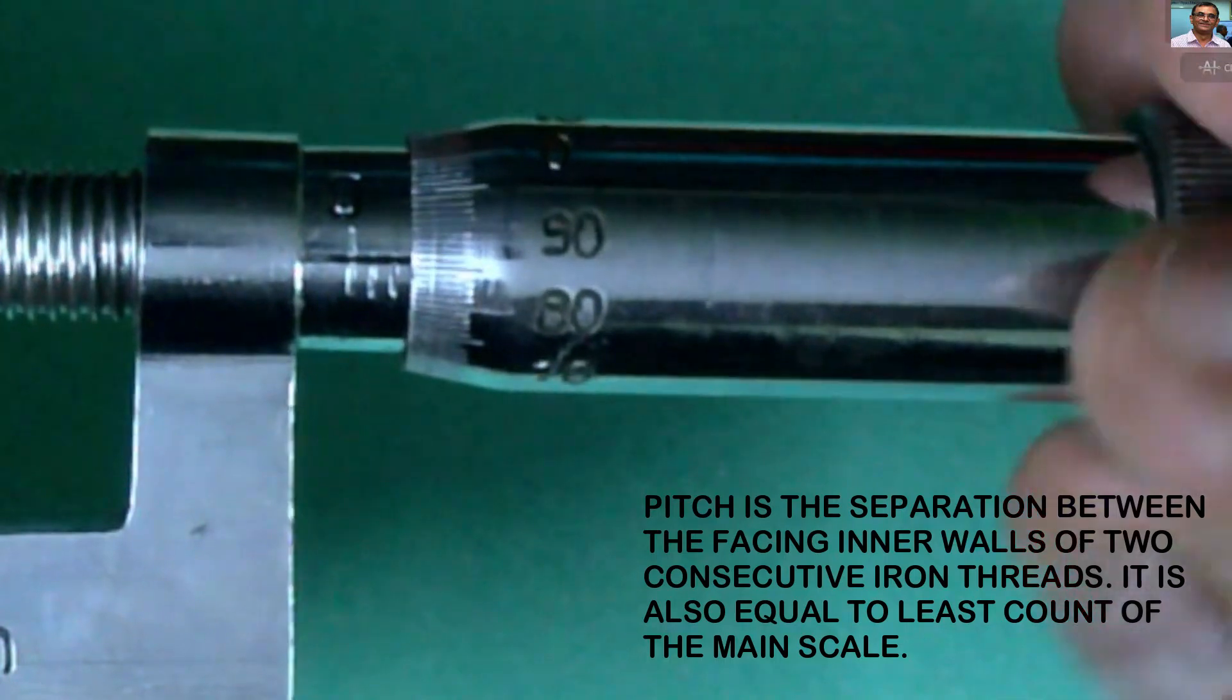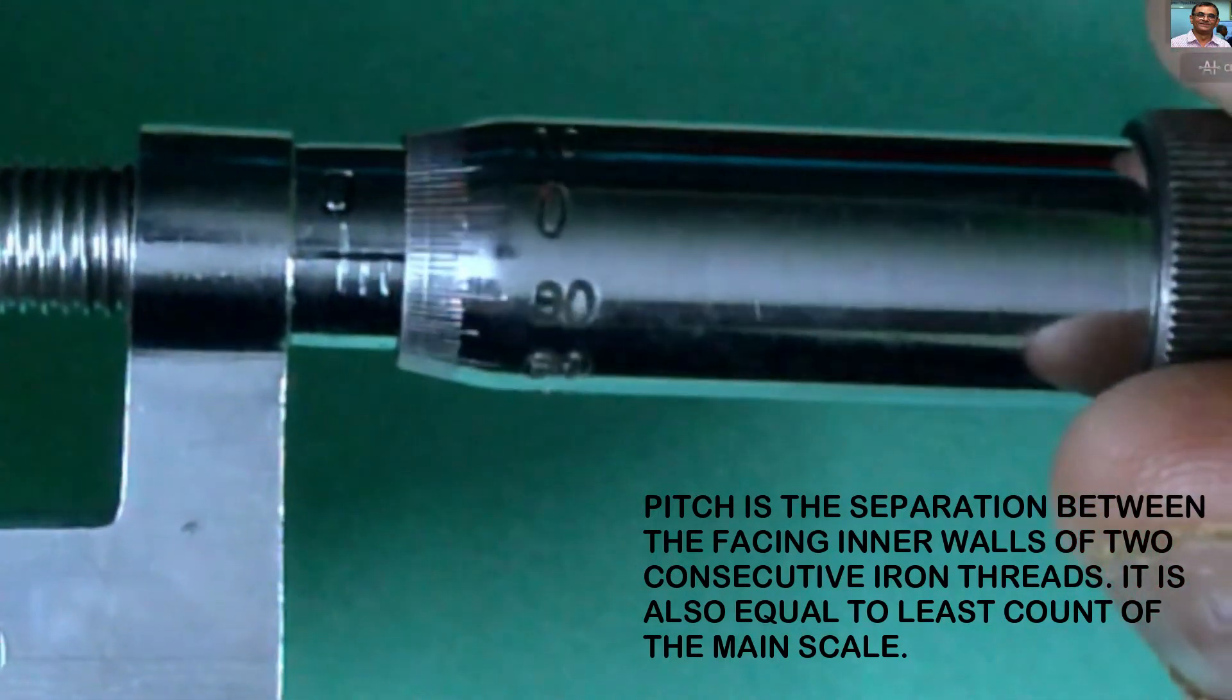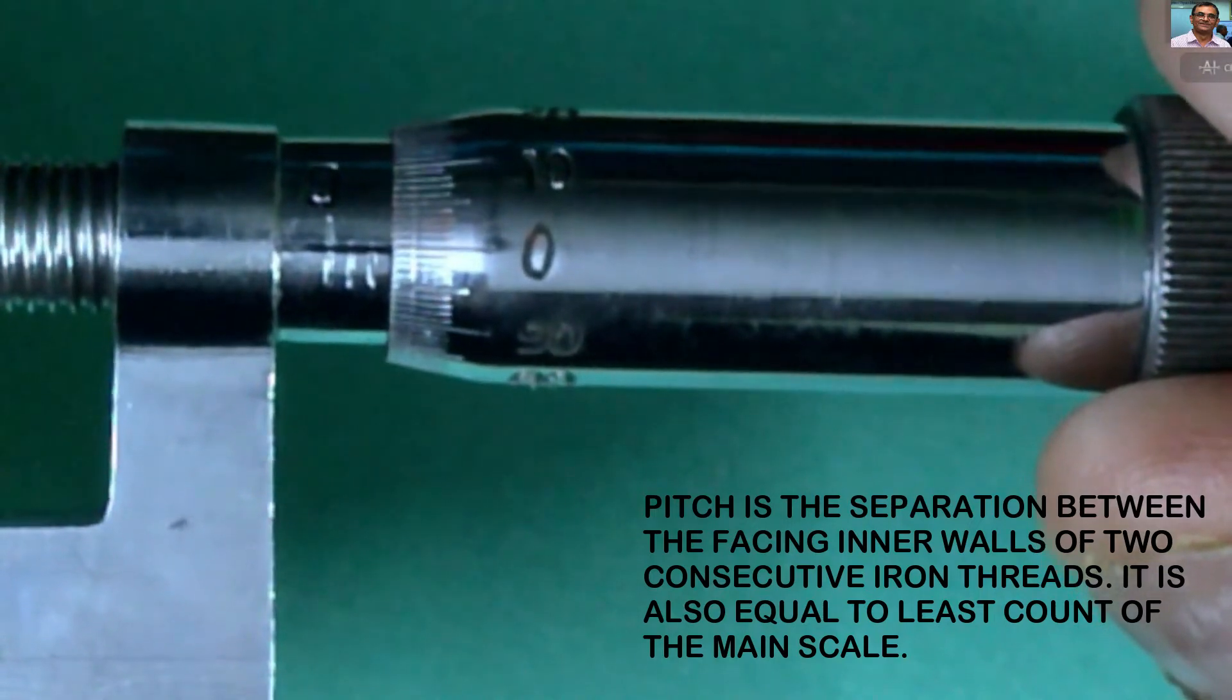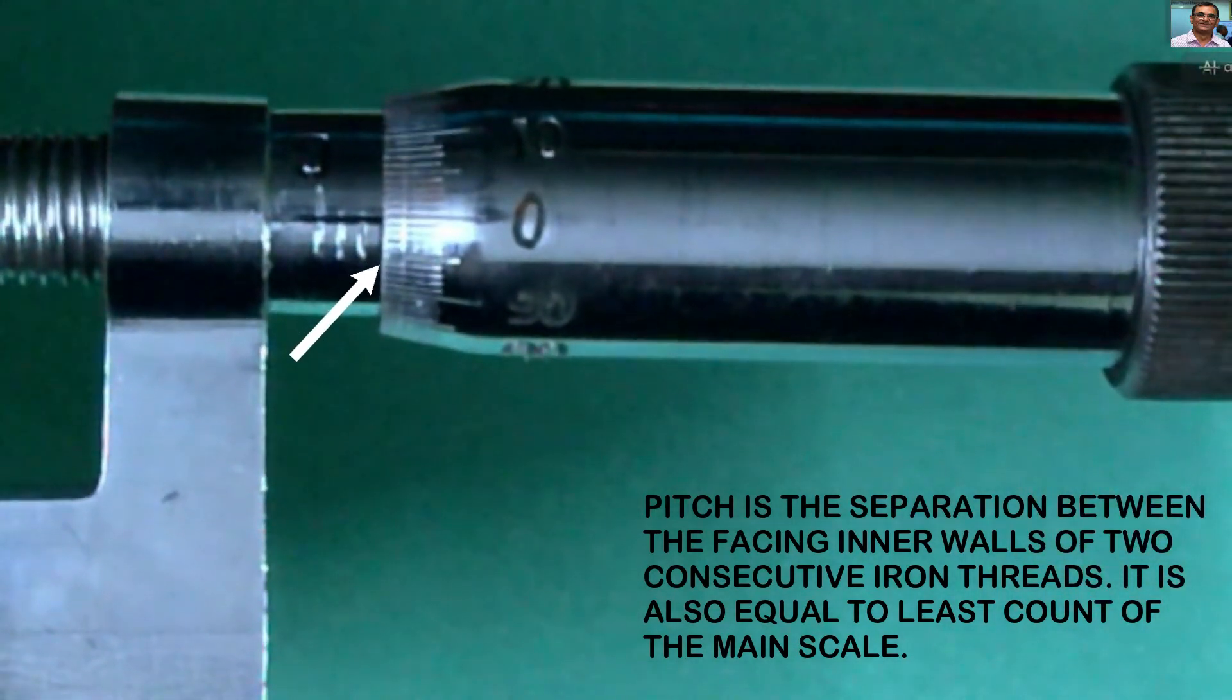Keep rotating. Now as zero of the circular scale coincides with the reference line, the third division is about to appear.